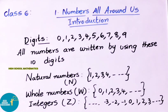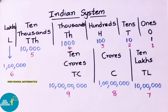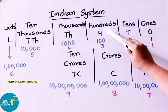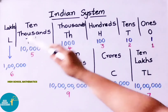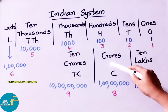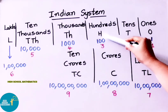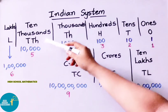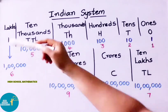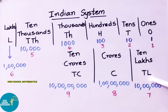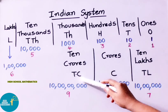In this introduction part, today we will learn how to write numbers in the Indian system. In the Indian system, the place names are: ones place (O), tens place (T), hundreds place (H), thousands (TH), ten thousands (TTH), lakhs (L), ten lakhs (TL), crores (C), and ten crores (TC).